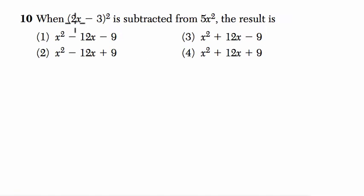Okay, so the phrasing here says when 2 times x minus 3 squared is subtracted from 5x squared, the result is which of the following. So be careful with your order. We have 5x squared and 2x minus 3 squared is being subtracted from it. So this is our expression.